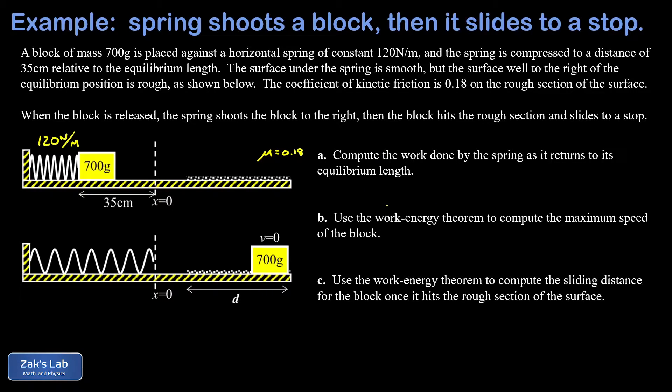In part A, we want to compute the work done by the spring as it returns to its equilibrium length. Now because the spring is exerting a force to the right and the mass is moving to the right, that work is positive. And in a previous video we've already derived the formula for the work done by a spring.